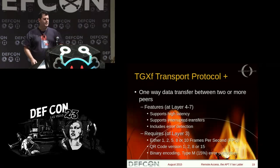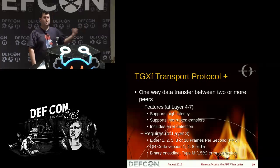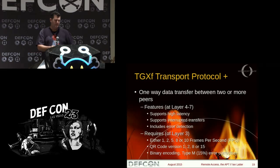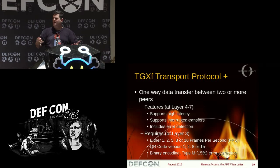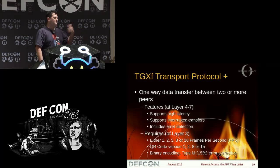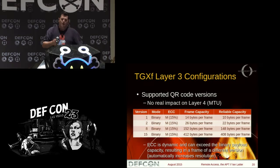This is a one-way transfer between two or more peers — two devices can see the same screen, so I now have multiple receivers off one sender. Features at layer four through seven: high latency is unavoidable since I can't tell the sender to speed up or slow down. It supports interrupted transfers because I know my position in the file based on packets received. It includes error detection both within the packet and end-to-end via CRC. At layer three, I've picked frame rates of one, two, five, eight, or ten frames per second, assuming a commodity camera like an iPhone at 30 fps.